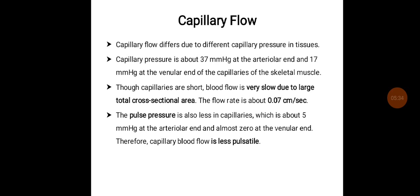Capillary flow differs due to different capillary pressure in tissues. Capillary pressure is about 37 mmHg at the arteriolar end and 17 mmHg at the venular end of the capillaries in a skeletal muscle. Though the capillaries are short, blood flow is very slow due to the large cross-sectional area. The flow rate is about 0.07 cm per second. The pulse pressure is about 5 mmHg at the arteriolar end and almost 0 at the venular end, so capillary blood is less pulsatile.